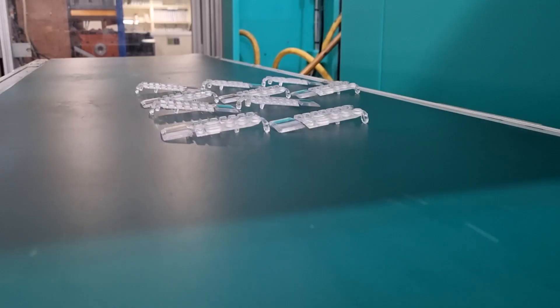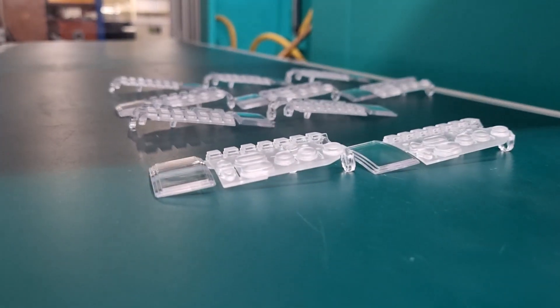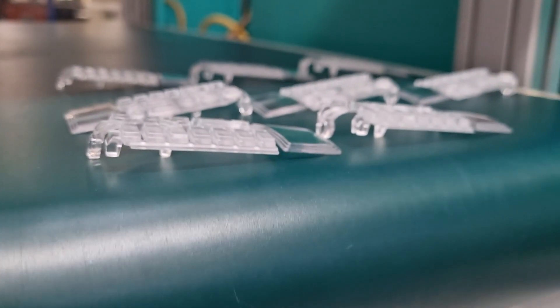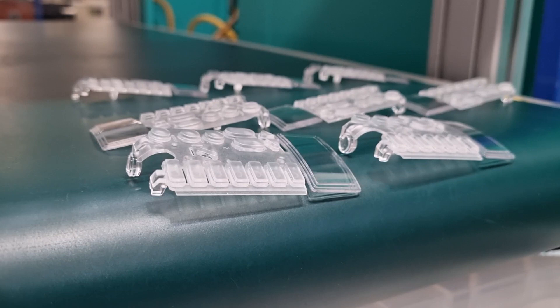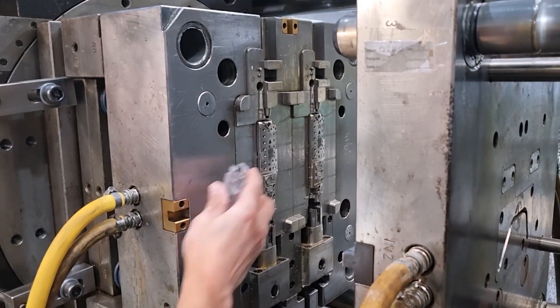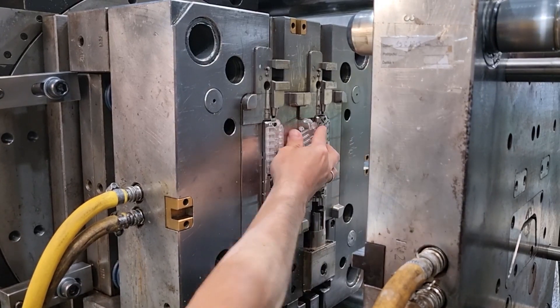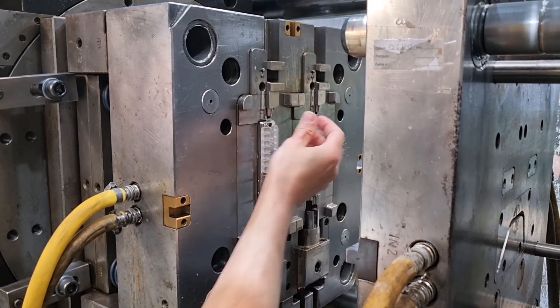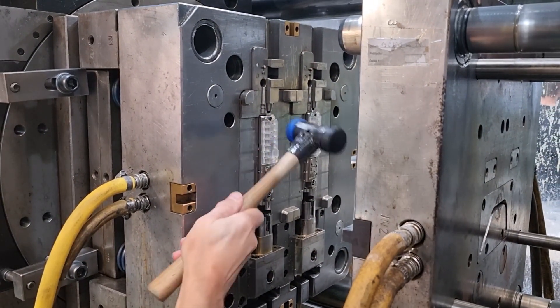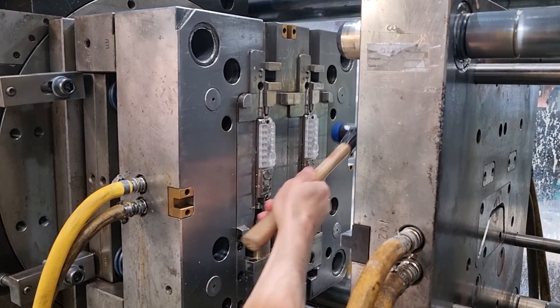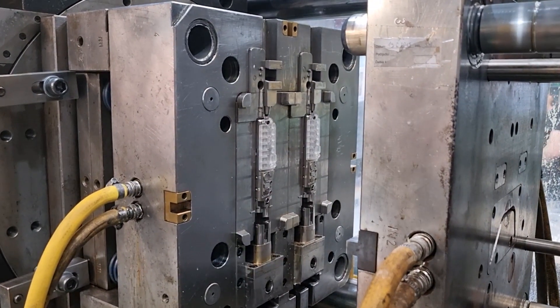Similar to single impression tools are overmold tools. These are tools that are designed to fit a prefabricated part molded in another tool so that another material can be molded over the existing part. These tools are usually priced similarly to single impression tools. However, because multiple tools are needed to create the finished article, they are often seen as the most expensive molding method.